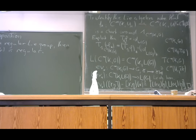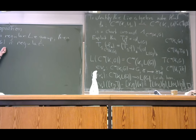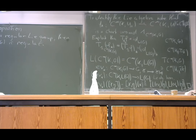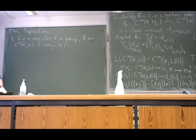As a consequence of regularity, if the Lie group G is locally exponential, also the current group is locally exponential. This gives a plethora of new infinite-dimensional groups, which are not modules over some base space, which are locally exponential. For example, if G is finite-dimensional, then the current group is infinite-dimensional.